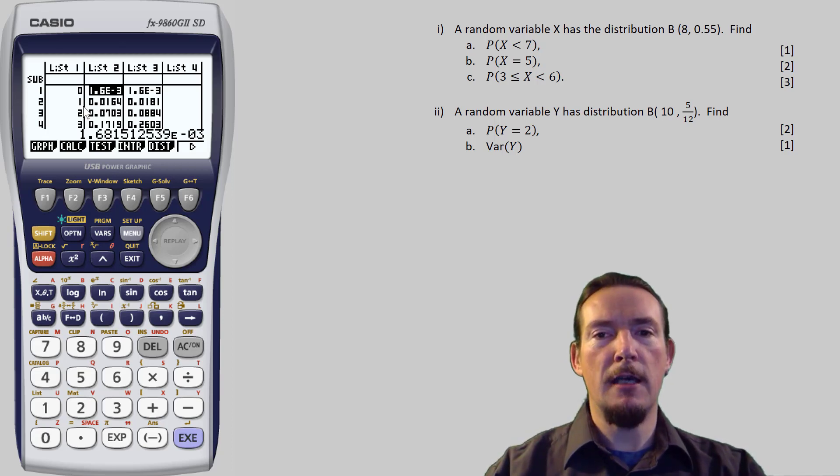OK, so we now have the entire distribution, with values of x from 0 through 8 in list 1, the associated binomial probabilities in list 2, and the cumulative binomial probabilities in list 3. Now it was very quick to rattle all of these off, and we now have all the information we need to answer any question the examiner might throw at us.